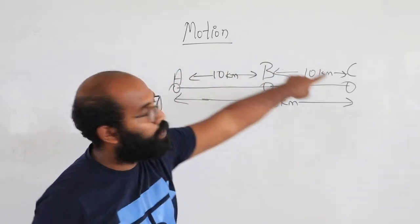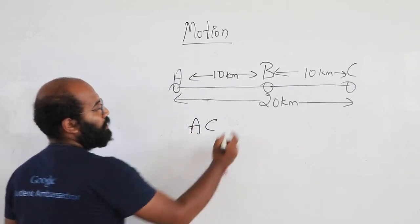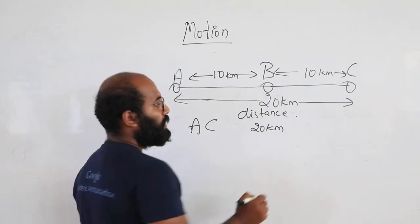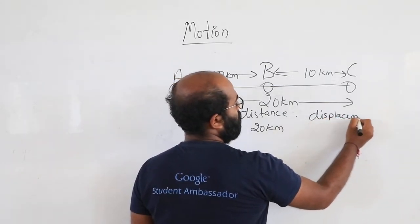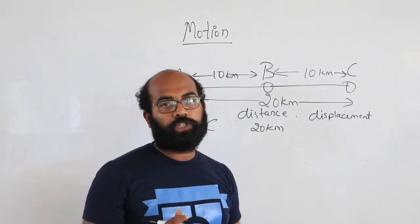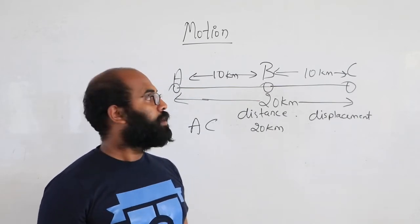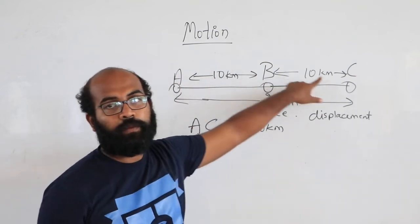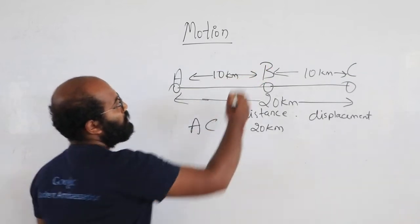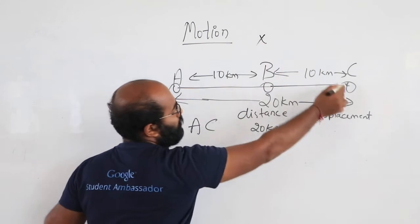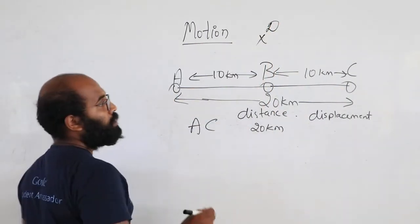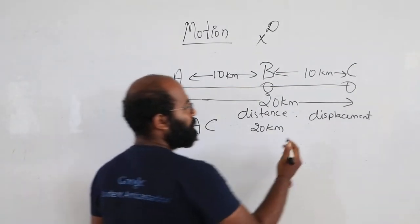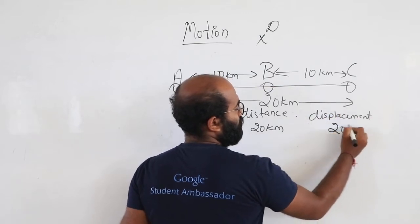Now when I say displacement — let's take the first situation. When I move from A to C, the distance will be 20 kilometers. What will be the displacement? Displacement means the shortest distance from the initial point to the final point. The initial point is A and the final point is C. The shortest distance is along the straight line from A to C, so the displacement will also be 20 kilometers.